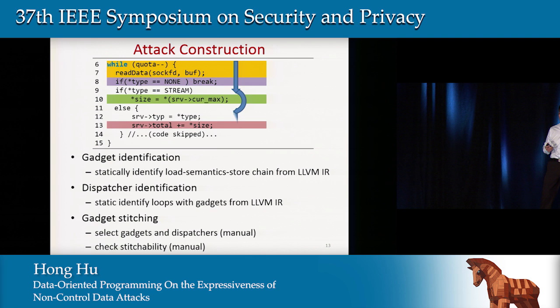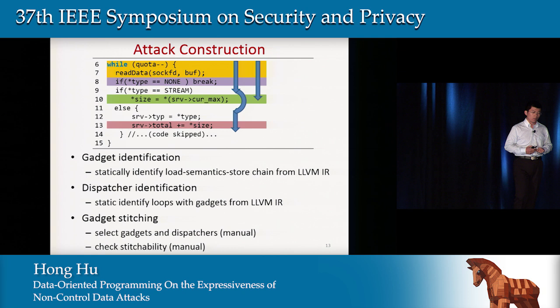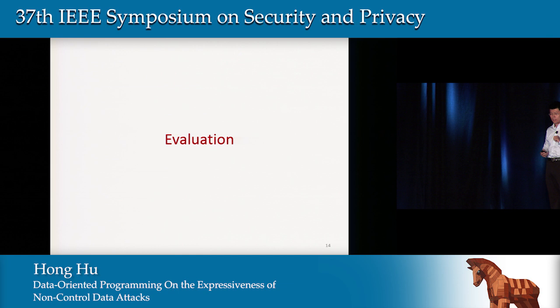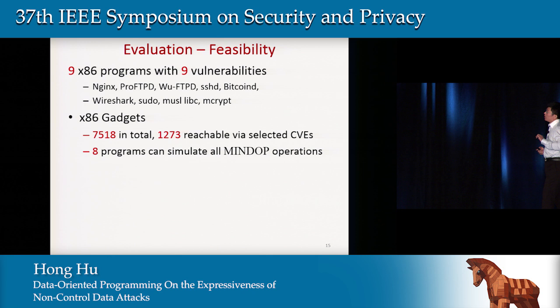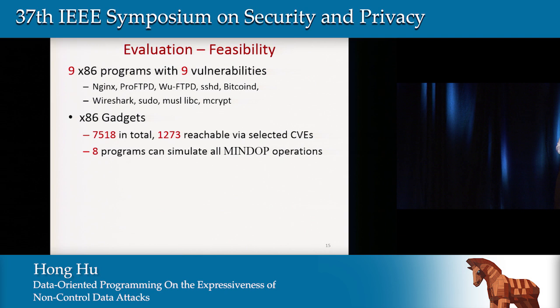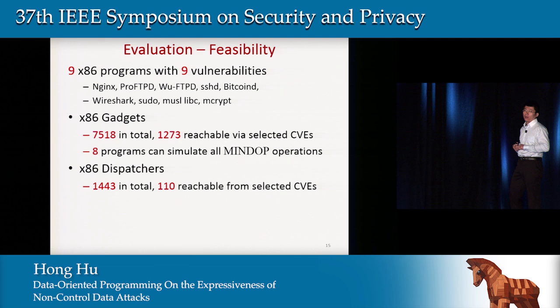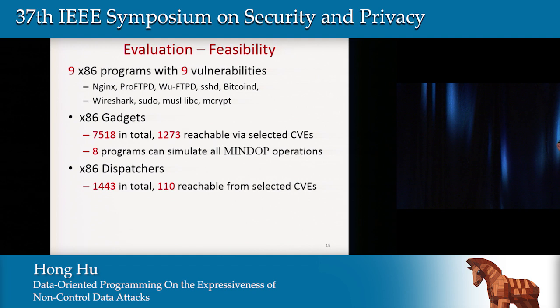We apply this technique to nine programs — including web servers, file servers, and client programs — each with at least one vulnerability from the CVE database. From these nine programs, we identified more than 7,000 gadgets, and from the concrete memory error we can reach more than 1,000 of them. Eight programs have enough gadgets to simulate all minDOP operations. We also identified about 1,500 dispatchers, of which about 110 are reachable from the concrete memory error. This means the basic elements of DOP are abundantly present in real-world programs, and we confirm that two programs can be used to build Turing-complete attacks.